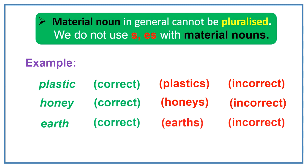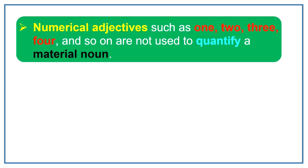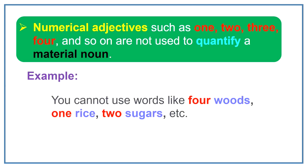Numerical adjectives such as 1, 2, 3, 4 and so on are not used to quantify a material noun. As material noun is uncountable and numerical adjectives are used to quantify only countable nouns. For example, you cannot use words like 4 woods, 1 rice, 2 sugars, etc.